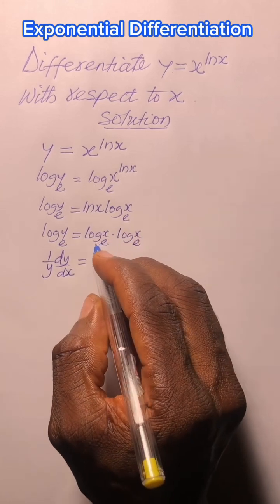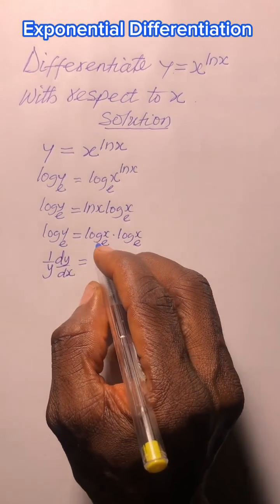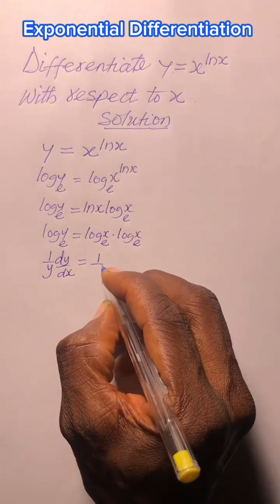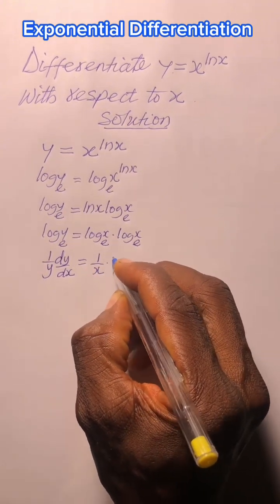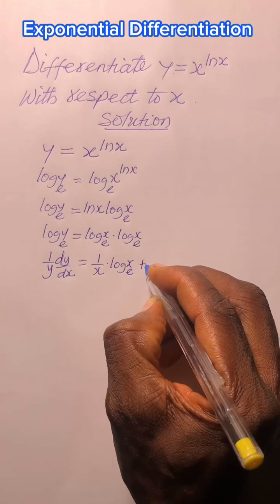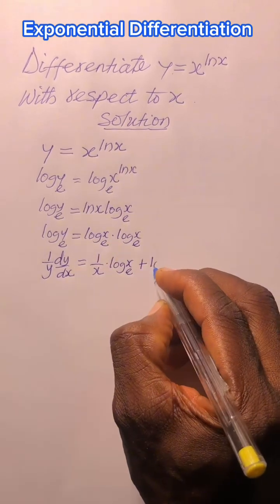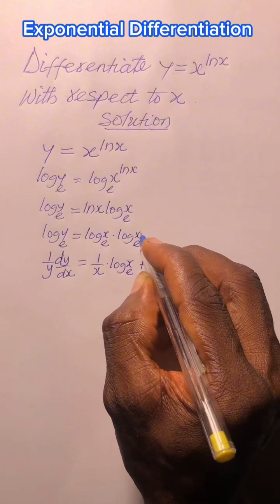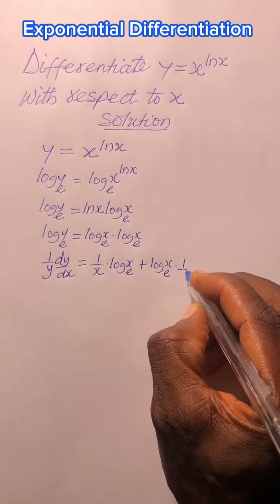Now on the right hand side, we are going to use the product rule. So we differentiate the first and write the second. Differentiating log_e(x), we have 1/x · log_e(x) plus, write the first log_e(x), differentiate the second. Differentiating log_e(x) is 1/x.